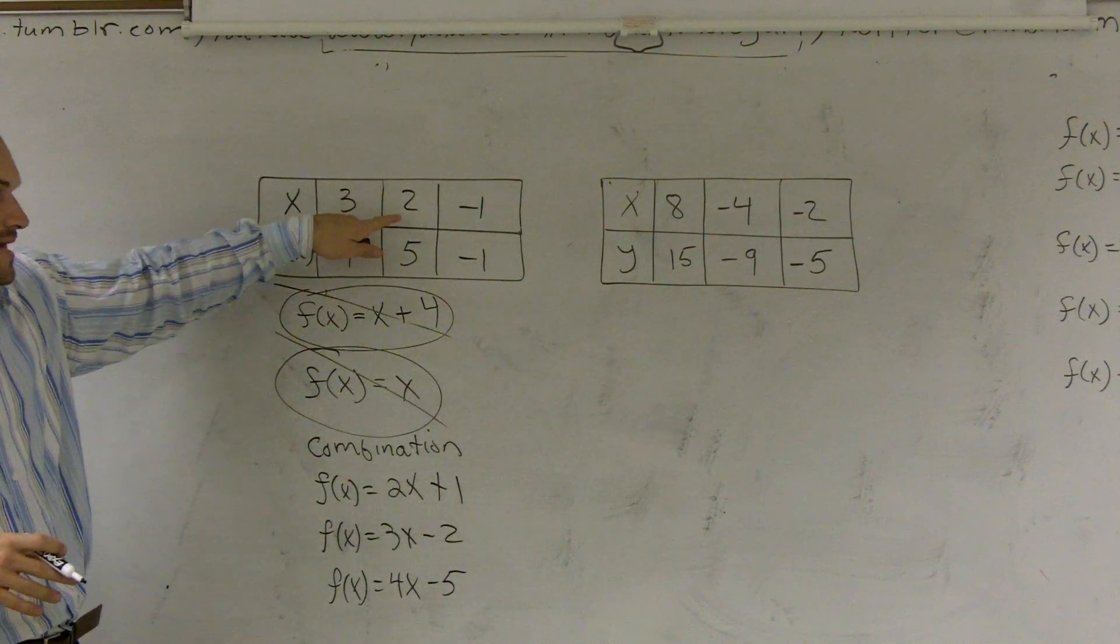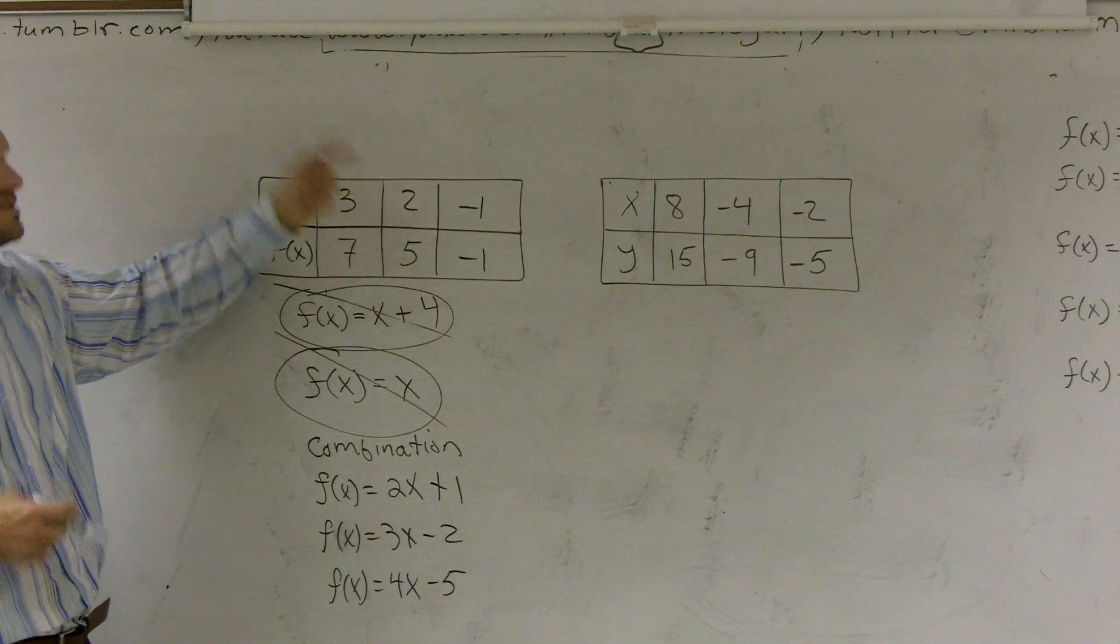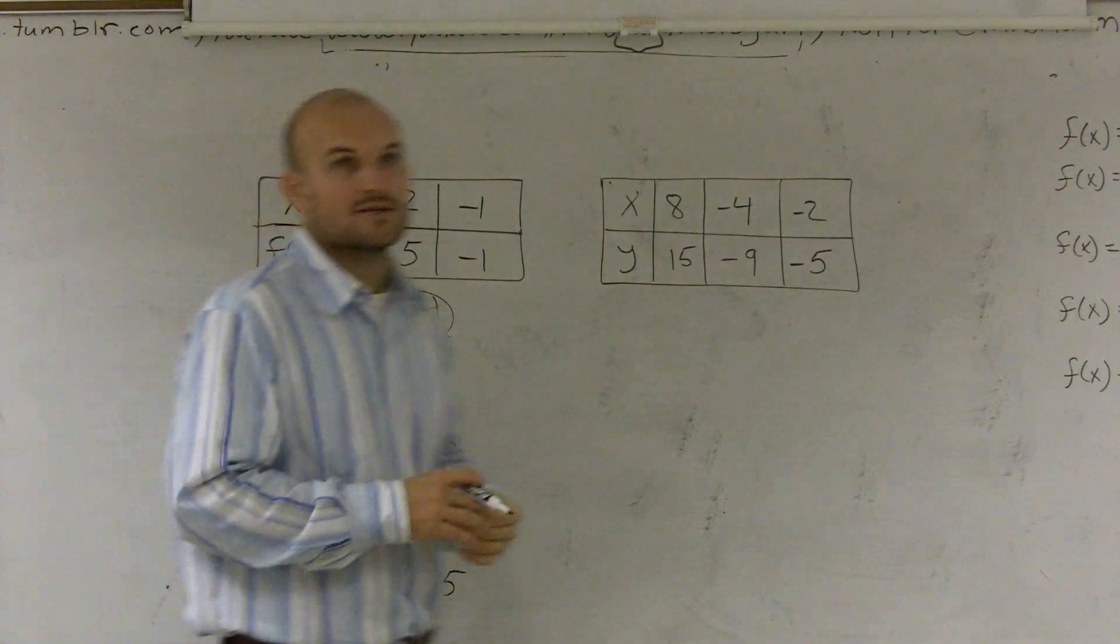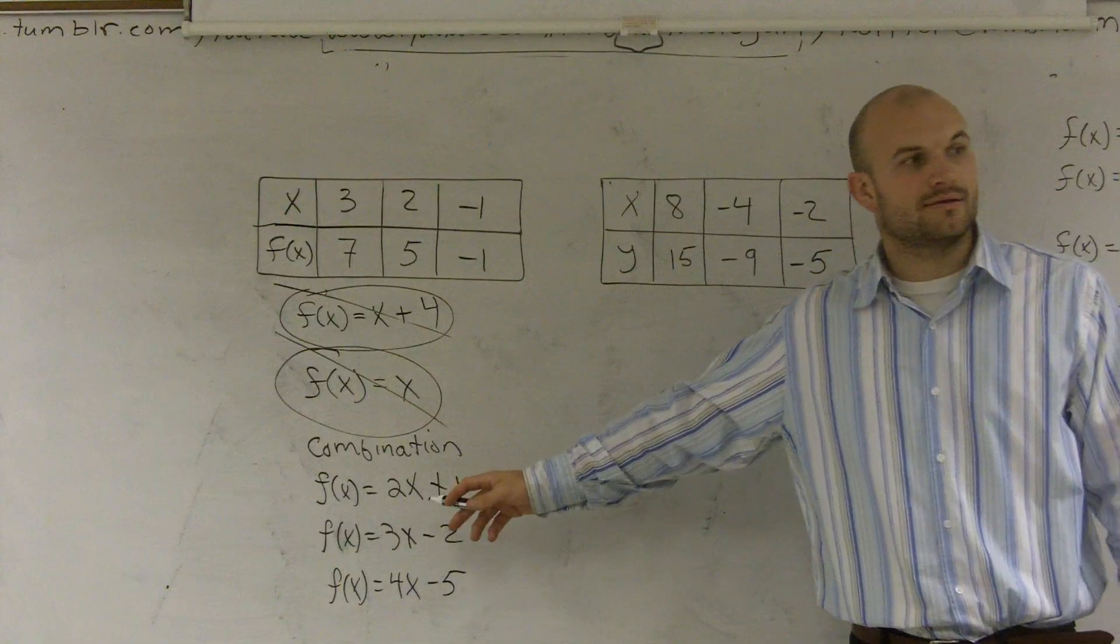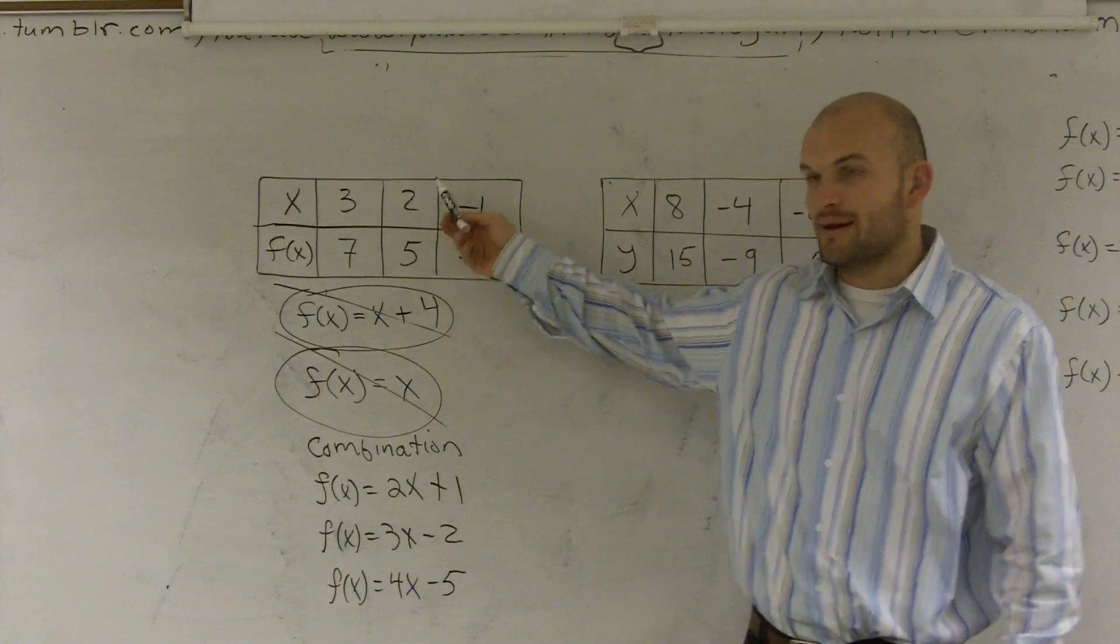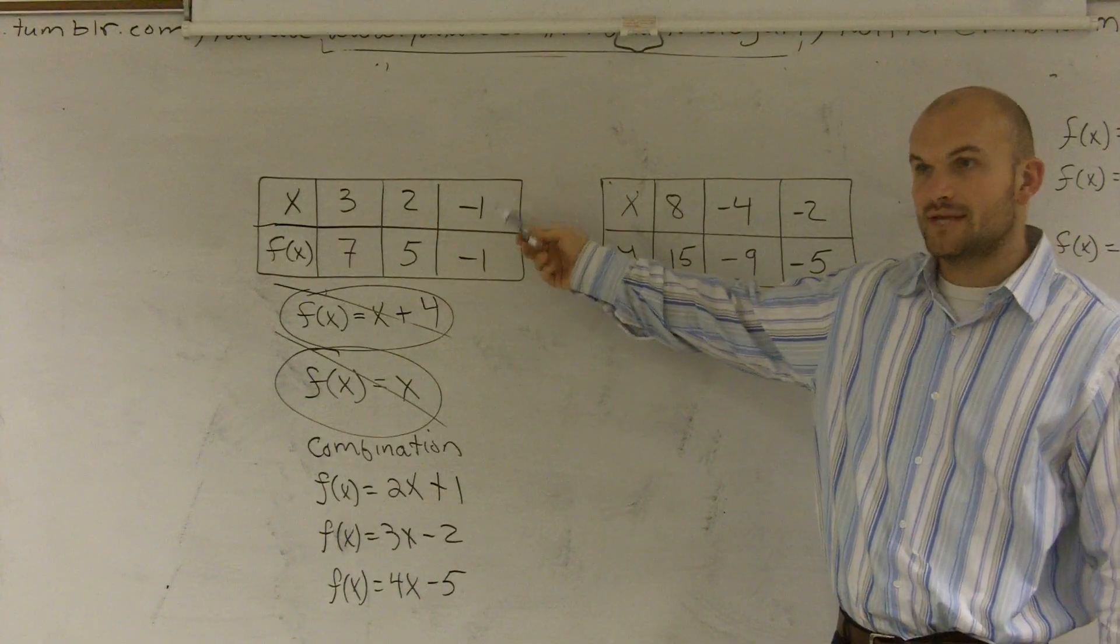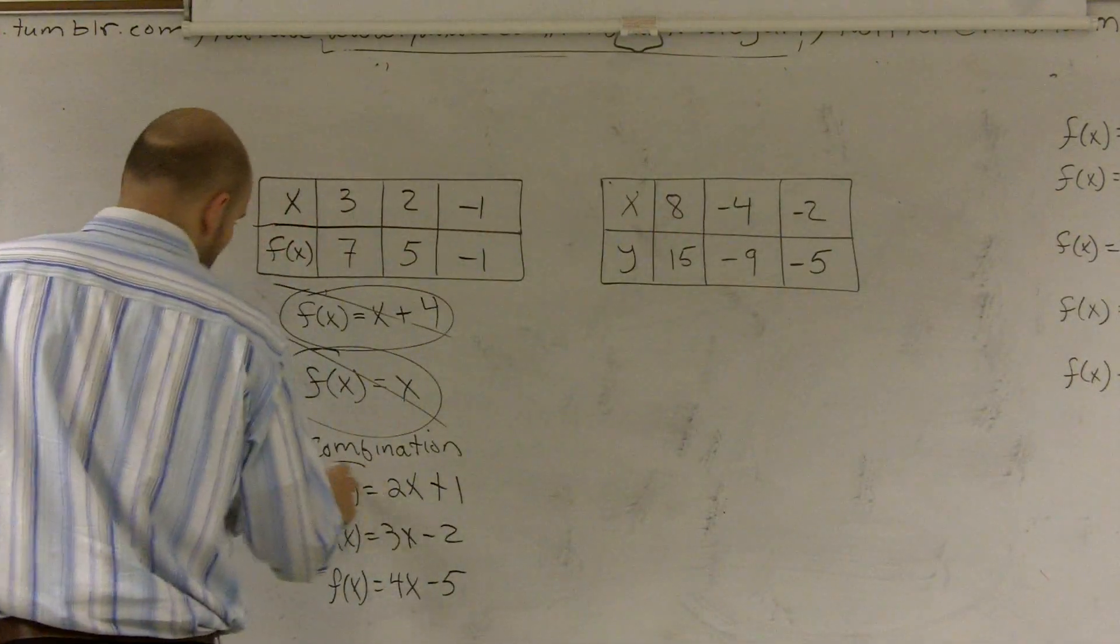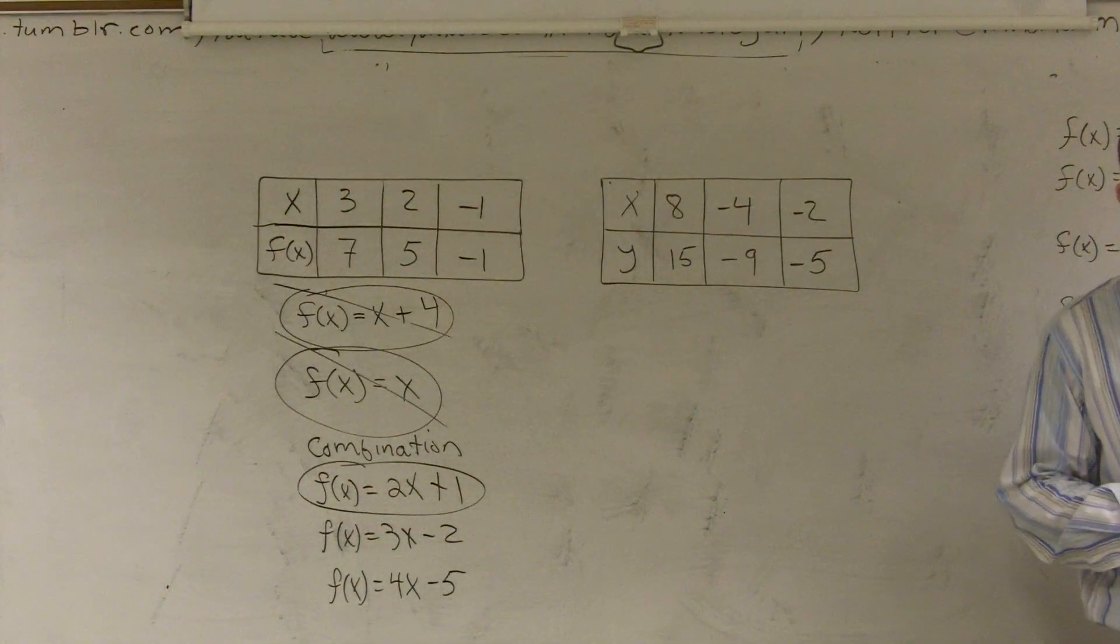Well, if you look at it, the first one, multiply by 2, add 1. Does it work for this one? 2 times 2 is 4, plus 1 is 5. Does it work for this one? Negative 1 times 2 is negative 2, plus 1 is negative 1. So therefore, my function is f of x equals 2x plus 1. Does that make sense?